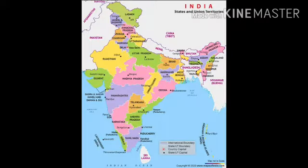Next is colors. Colors help us to identify the features on a map quickly and easily. Maps generally use standard colors such as blue for all water bodies like rivers, lakes, streams, and oceans; green for forests and plains; and yellow or brown for landforms.